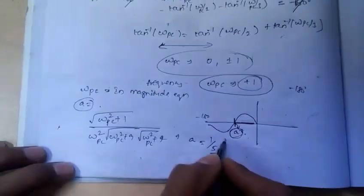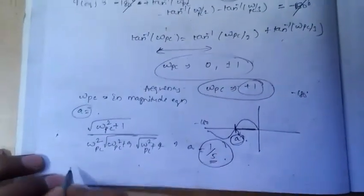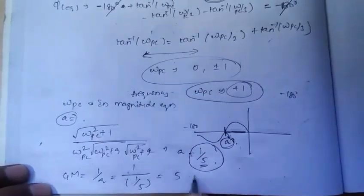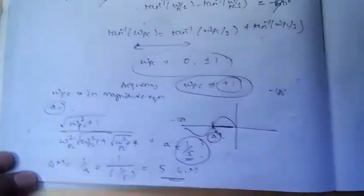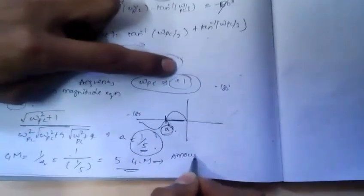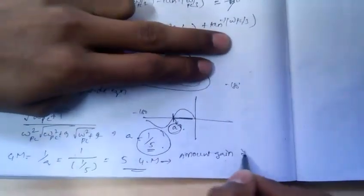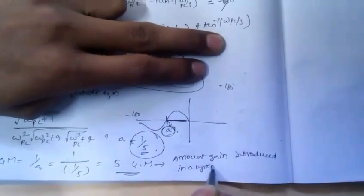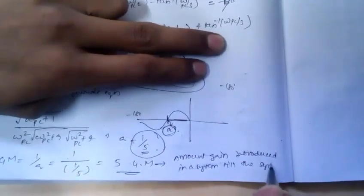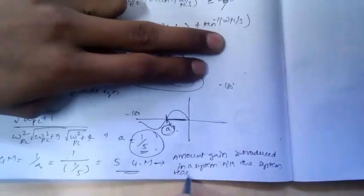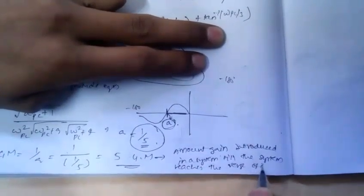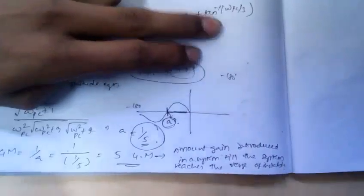Since we have got magnitude 1 by 5, the gain margin is nothing but 1 by A — that is, 1 divided by 1/5, which equals 5. The gain margin is 5. Gain margin is nothing but the amount of gain that can be introduced into a system until the system reaches the verge of instability. So the gain margin is 5.